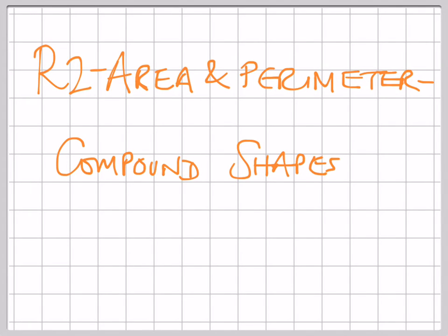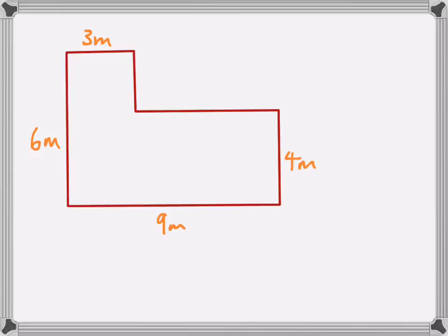Video R2, Area and Perimeter, covers compound shapes. Compound shapes are usually shapes that are made up of two or more rectangles. For these you can work out the perimeter and you can also work out the area.